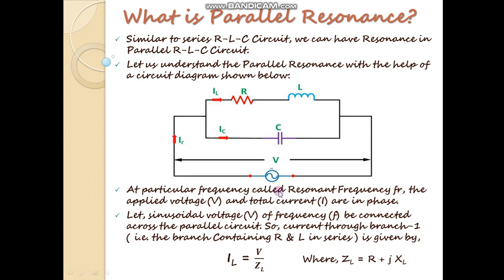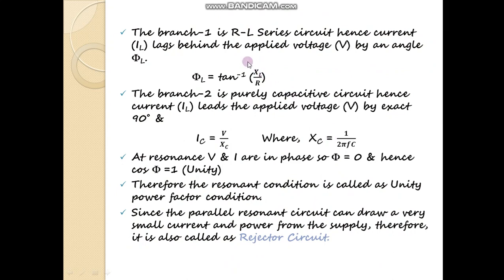A sinusoidal voltage V of frequency F is connected across this parallel circuit. The current I will get divided into IL and IC. IL will be the current flowing through branch 1, which contains R and L in series, and IC will be the current flowing through branch 2, which contains only the capacitor. The current through branch 1 is given by IL equals V by ZL, where ZL is R plus jXL. The branch 1 is an RL series circuit, hence the current IL lags the applied voltage V by some angle phi L.